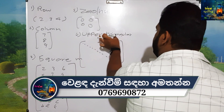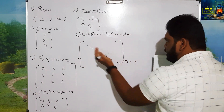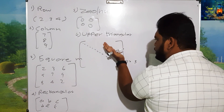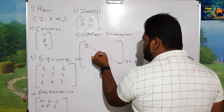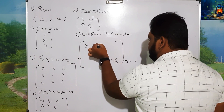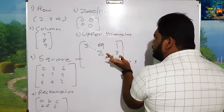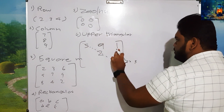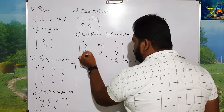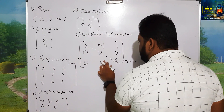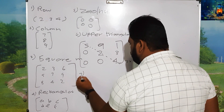If you want to make a triangle diagonal, you can make this triangle diagonal. The size of the triangle is to match the triangle with the triangle. There is a triangle matrix. This is the lower triangle matrix.